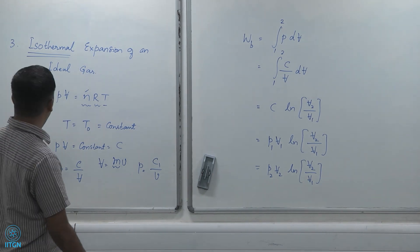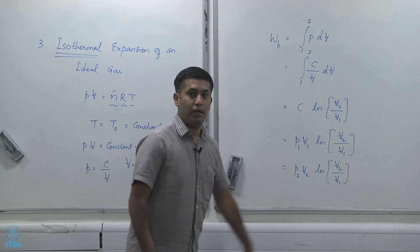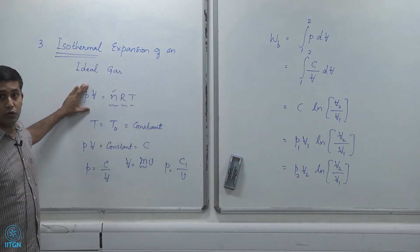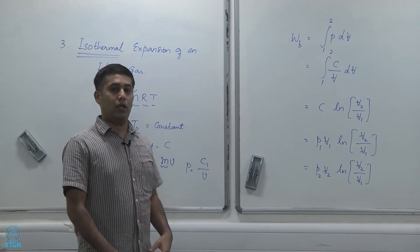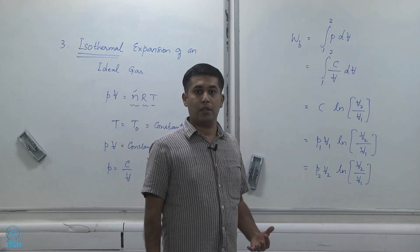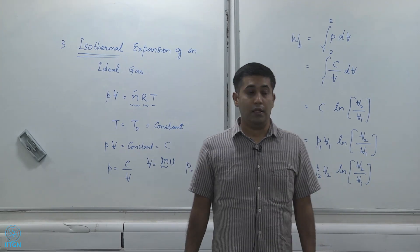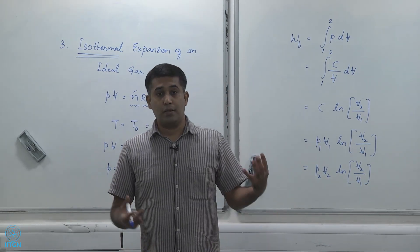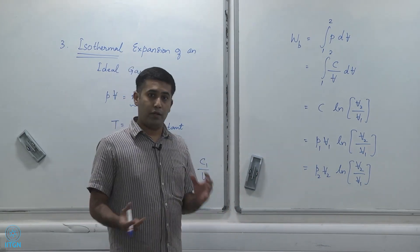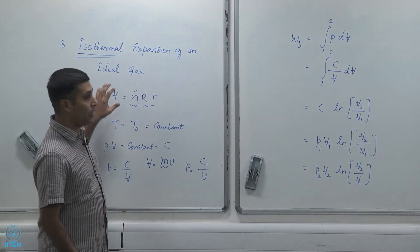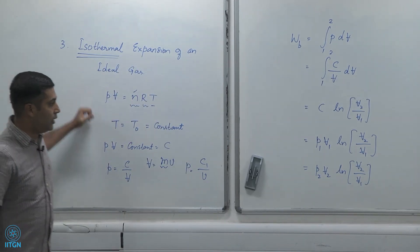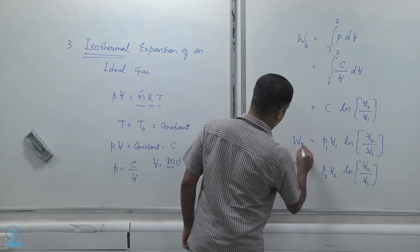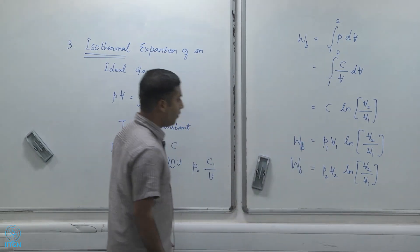This result is specific only to ideal gases, because we assumed the ideal gas law holds. For example, water vapor at 1 atmosphere and about 105 degrees does not behave like an ideal gas, so this formula would not be valid. First I have to make sure the substance behaves like an ideal gas, and only then can I write the moving boundary work using this expression.